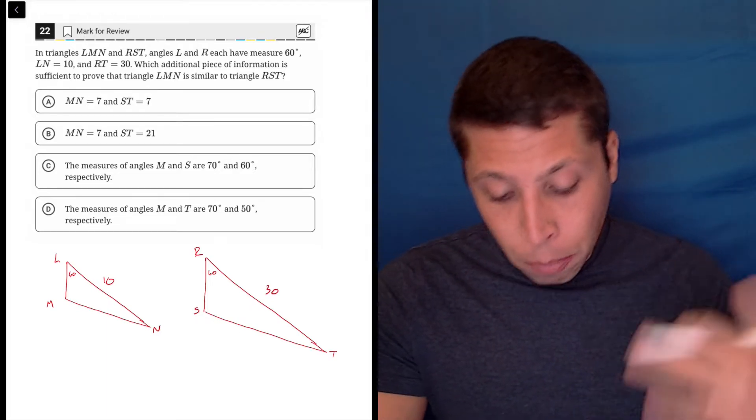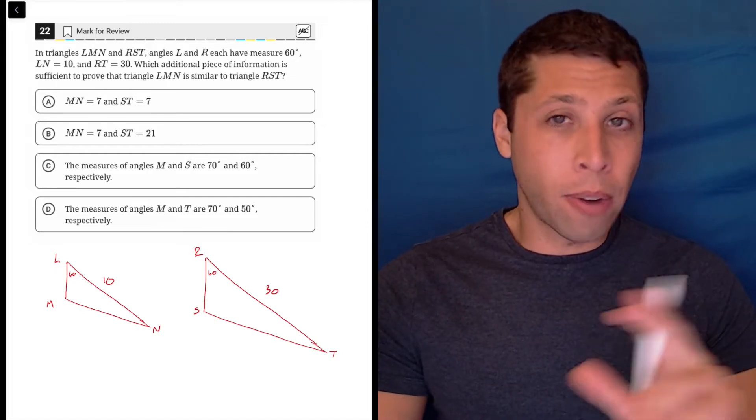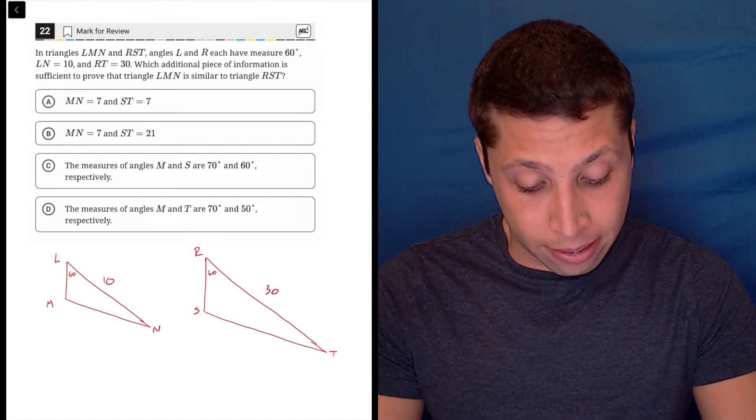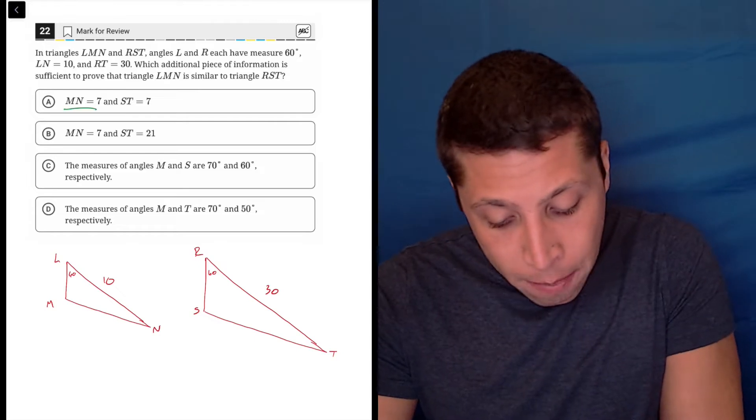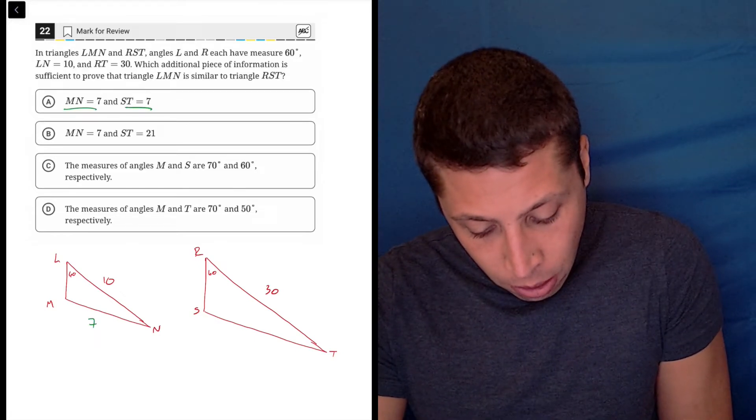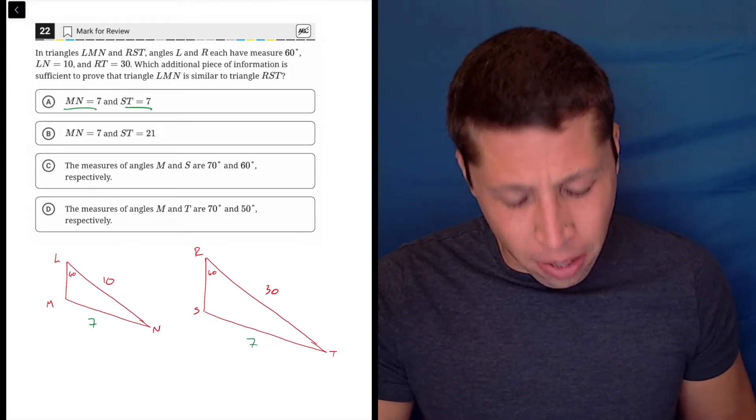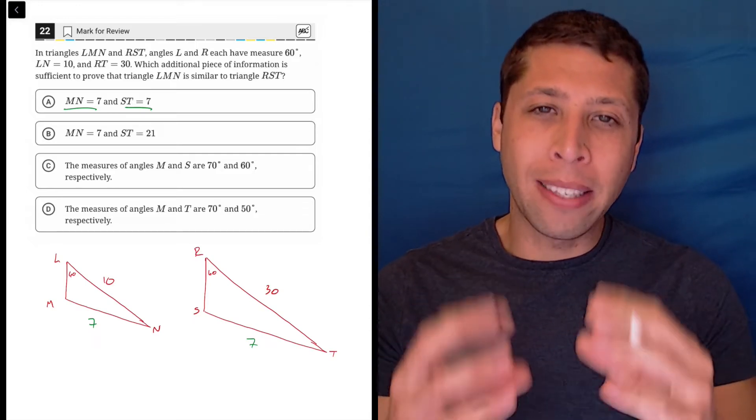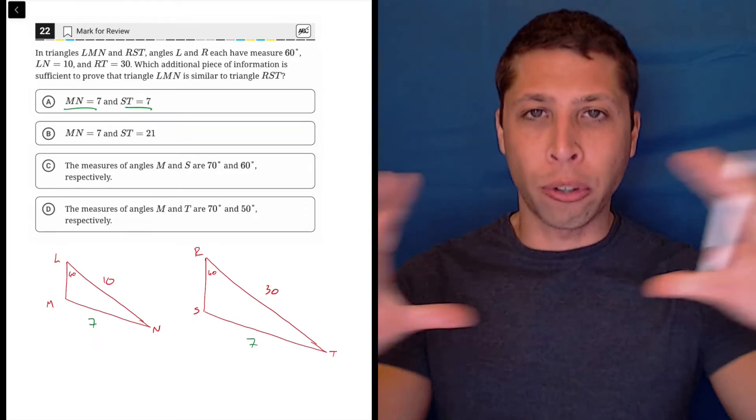Now we need to prove that they're similar, and there are two things that right off the bat I think don't make any sense, so hopefully we can eliminate choice A, because if MN and ST were both 7, we know what similar triangles mean - they mean it's the same basic triangle shape but one is bigger or smaller, it's kind of like it grows and shrinks.